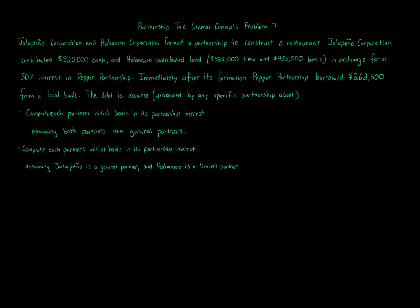Partnership tax general concepts, Problem 7. Jalapeno Corporation and Habanero Corporation formed a partnership to construct a restaurant. Jalapeno Corporation contributed $525,000 cash and Habanero contributed land with a fair market value of $525,000 and a basis of $455,000, in exchange for a 50% interest in Pepper Partnership. Immediately after its formation, Pepper Partnership borrowed $262,500 from a local bank.